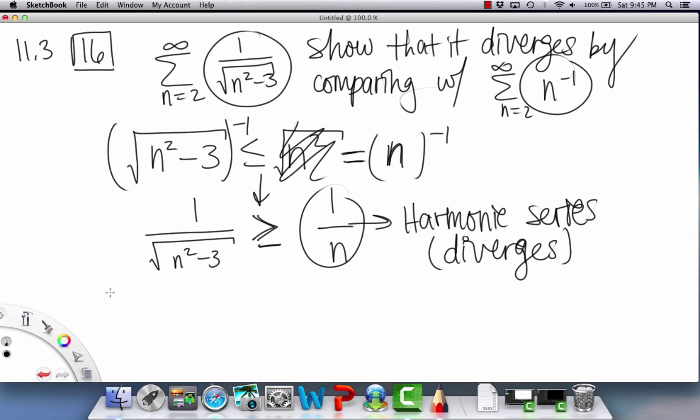So we can conclude, actually, pretty straightforward, that this, since this, 1 over n, diverges, because we know that is a quality about the harmonic series. So, by the comparison test...